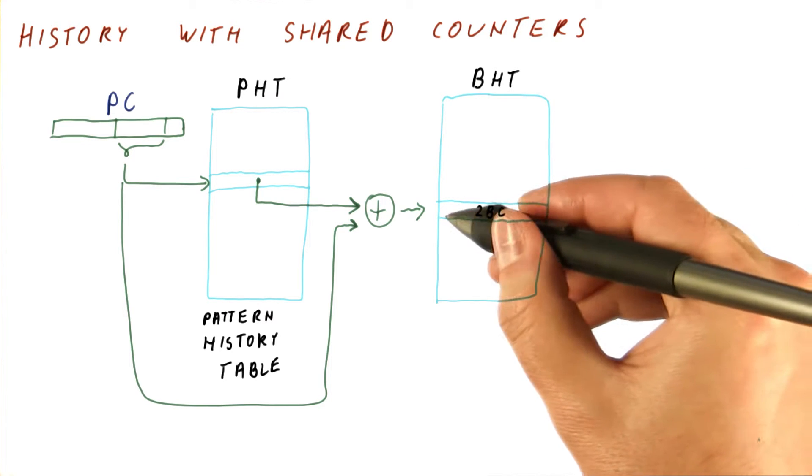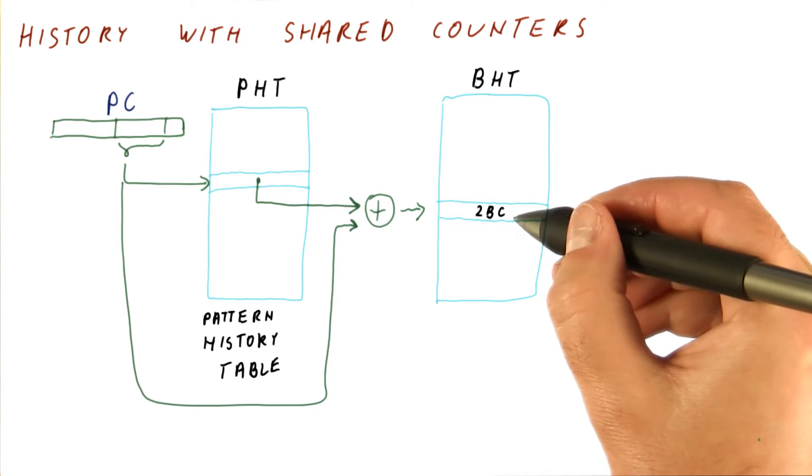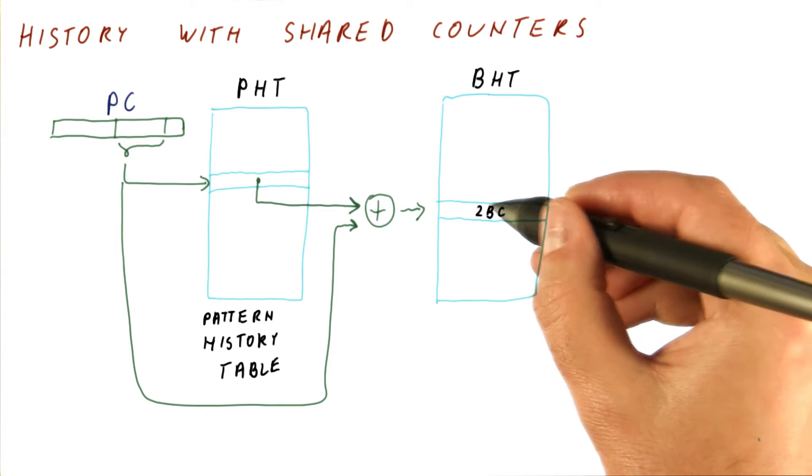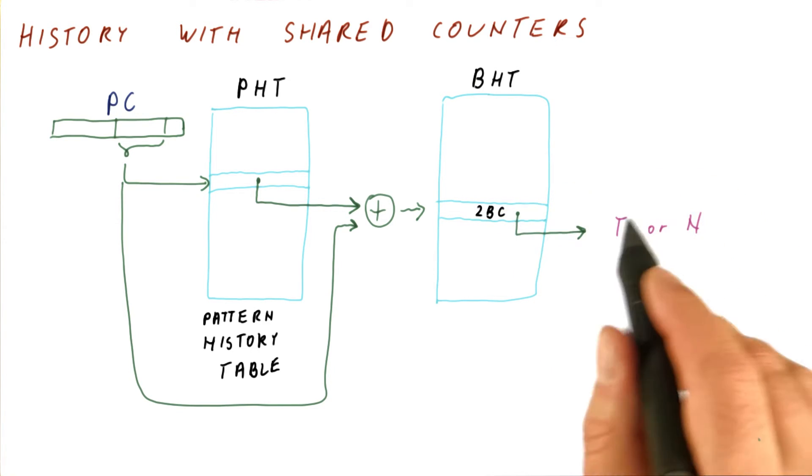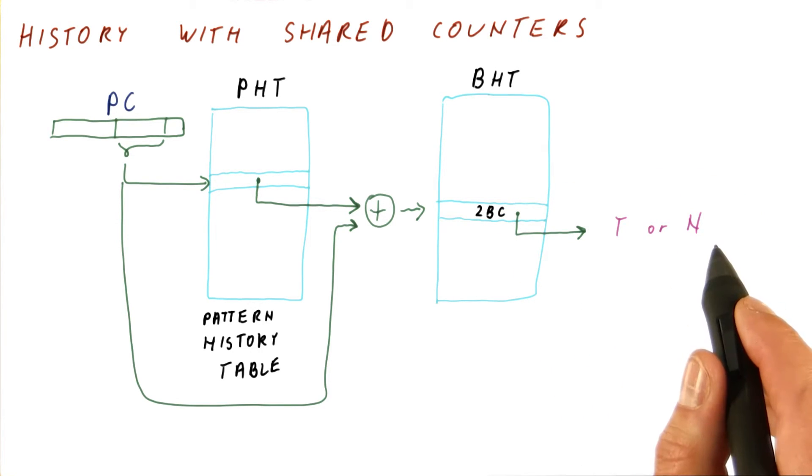This branch history table has entries, each of these entries is just a single two-bit counter. So each entry is very small. And that entry will tell us whether we should be predicting taken or not taken.